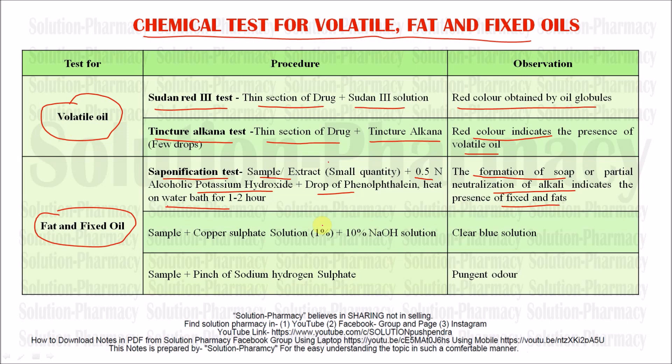As we told you, fat and fixed oil are chemically esters of fatty acid and alcohol, which is glycerol. In the saponification test, when fixed oil or fat is treated with potassium hydroxide, hydrolysis occurs and fatty acid and glycerol are released. The fatty acid is then converted to its potassium salt — which is a soap molecule. This is the principle behind the saponification test.